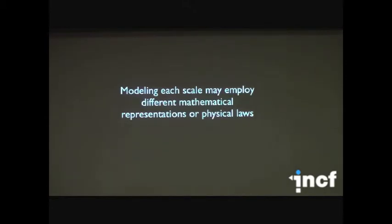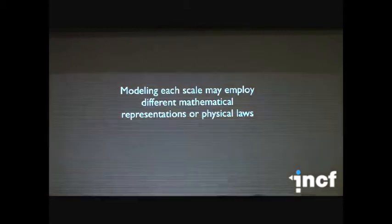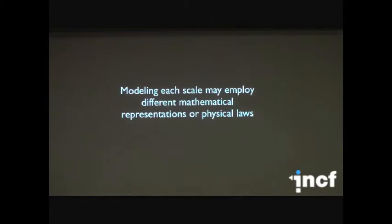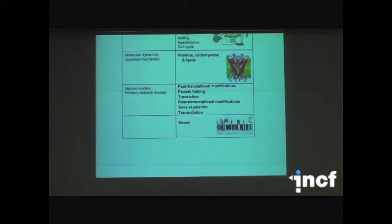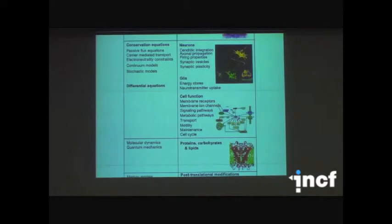For each of those individual scales, we do for the most part have mathematical techniques for describing them now. But each scale has a different mathematical approach based on the physical laws involved depending on the level of abstraction. From the level of the gene to the brain, we have Markov models, Boolean network models, protein folding models involving molecular dynamics and quantum mechanics, stochastic diffusion describing signaling and metabolic pathways, and differential equations describing electrical properties.